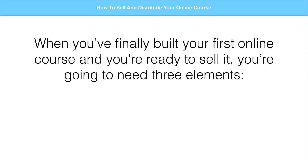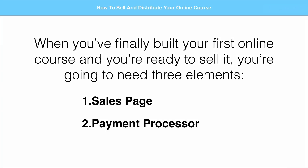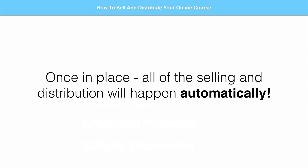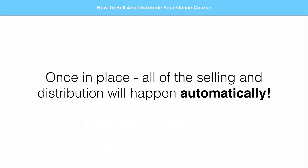When you've finally built your first online course and you're ready to sell it, you're going to need three elements to pull this off: a sales page, a payment processor, and a digital distribution tool or service. And once in place, all of the selling and the distribution will happen automatically, which is a huge reason why I love digital products like online courses. So today I want to walk you through these three elements. Let's start with the sales page.